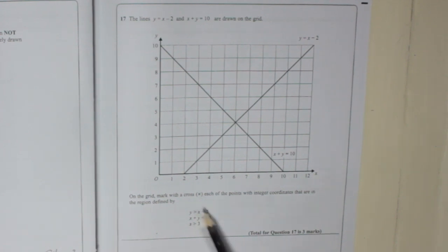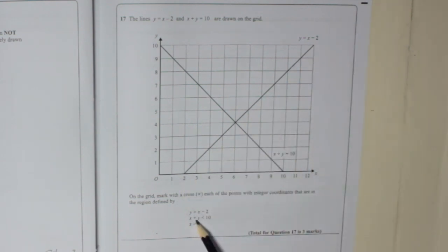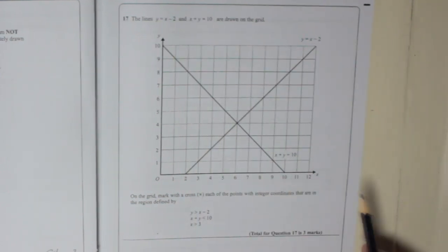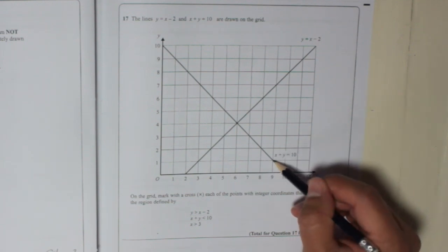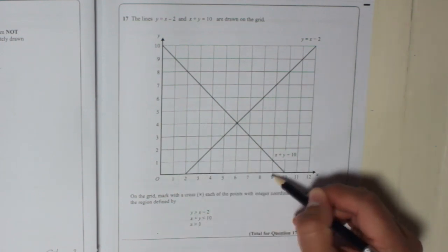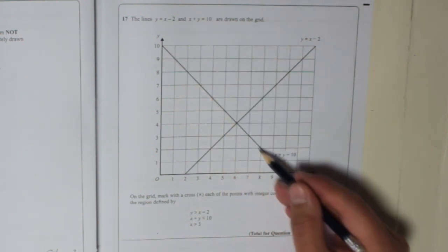The first thing you have to do is draw all these lines as equals. So y equals x minus 2 — that's already there. x plus y equals 10 — that's already there. All that means is that the x coordinate plus the y coordinate is 10. For example, this point here is 9 plus 1, that one is 8 plus 2, that one is 7 plus 3. So it always adds to 10, and that gives you this line.